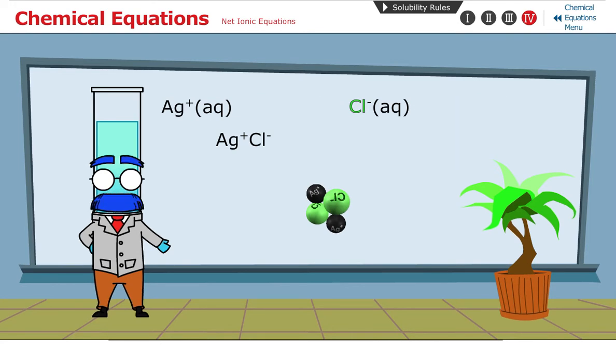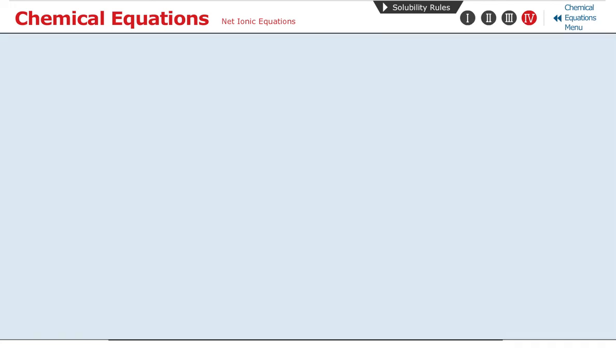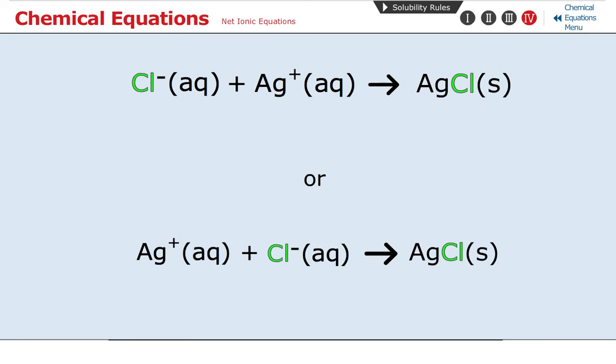Write the reaction using only ions that form the precipitate. Cl⁻(aq) plus Ag⁺(aq) reacts to produce AgCl(s). Or this could also be written as Ag⁺(aq) plus Cl⁻(aq) reacts to produce AgCl(s).